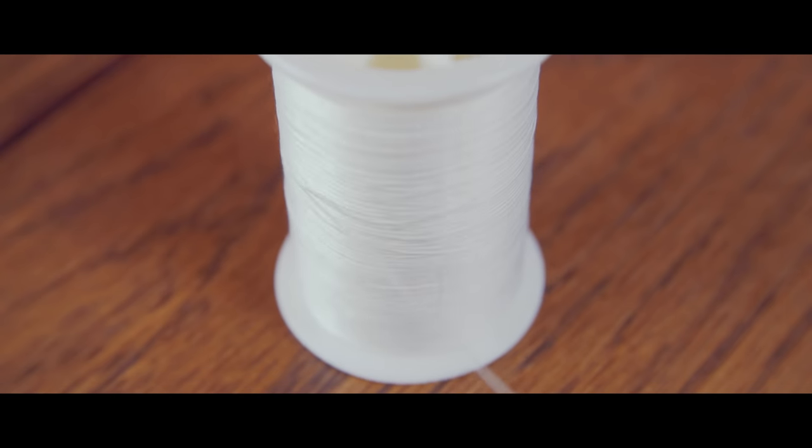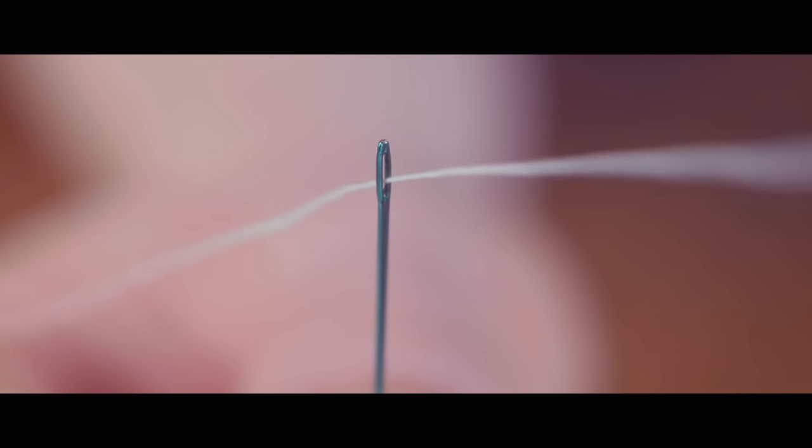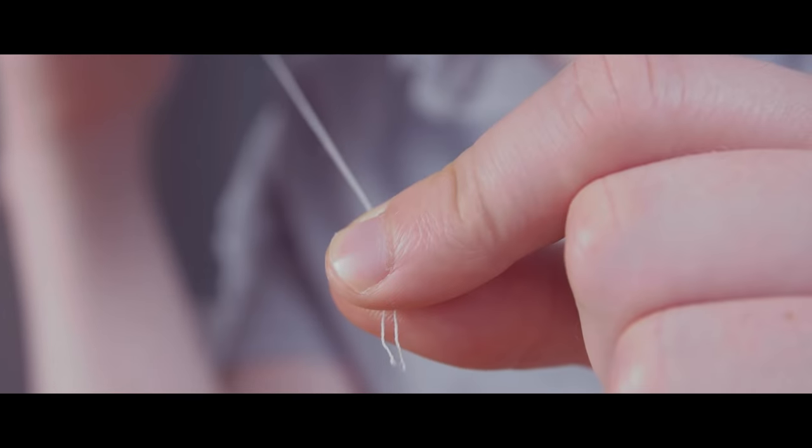The next step is to thread your needle. You'll need approximately 24 inches of thread for a single button. Now, we're going to double thread the needle to give the best possible strength. Pull the thread through the needle making both ends of the thread equal in length.